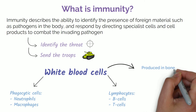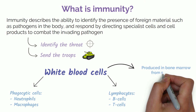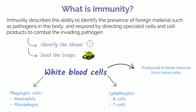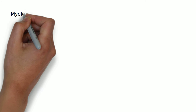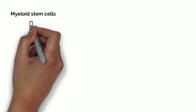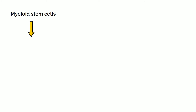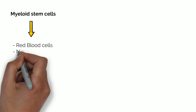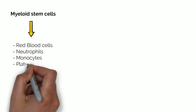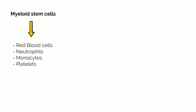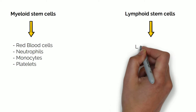White blood cells are produced in the bone marrow from differentiation of stem cells. Myeloid stem cells differentiate into red blood cells, neutrophils, monocytes and platelets. The lymphoid stem cells differentiate into lymphocytes or white blood cells.